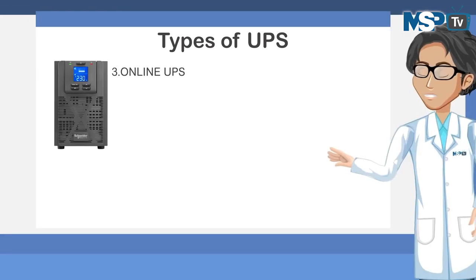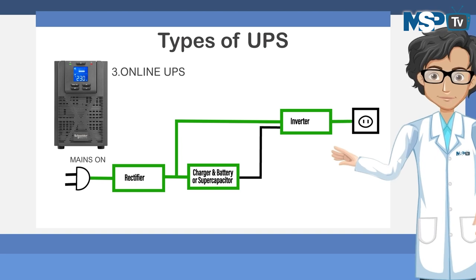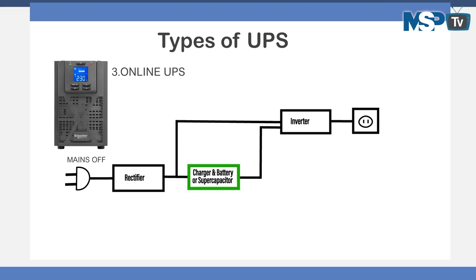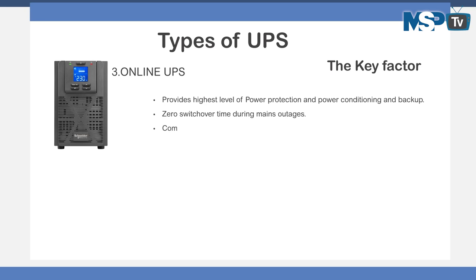The third and final type of UPS is the online UPS. These differ from offline or standby UPS because the DC and AC converter is always connected. This means there will be no transfer time between the main power source and battery, providing greater protection against spikes, sags, electrical noise, and complete power failure. Key factors: they provide the highest level of power protection and conditioning, with zero switchover time from mains outages.